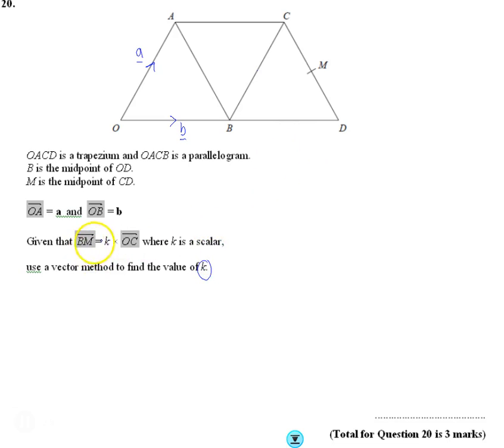Let's work out BM and OC. So let's work out BM first. B to M means I'm going to travel up to C and down to M. I suppose I could go the other way, but I'm going to go B to C plus half of C to D, because this is the midpoint.